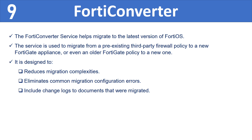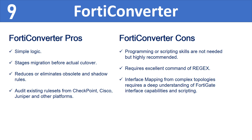The ninth tool is FortiConverter. The FortiConverter service helps migrate to the latest version of FortiOS. It is used to migrate from a pre-existing third-party firewall policy to a new FortiGate appliance, or from an older FortiGate policy to a new one. It is designed to reduce migration complexities, eliminate common migration configuration errors, and include change logs to document what was migrated. Pros include simple staged migration before actual cutover, reduction or elimination of obsolete and shadow rules, and the ability to audit existing rule sets from Checkpoint, Cisco, Juniper, and other platforms. Cons include that programming or scripting skills are not required but highly recommended, and interface mapping from complex topologies requires a deep understanding of FortiGate interface capabilities.